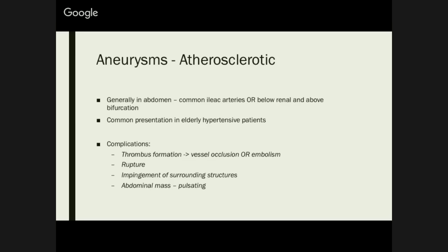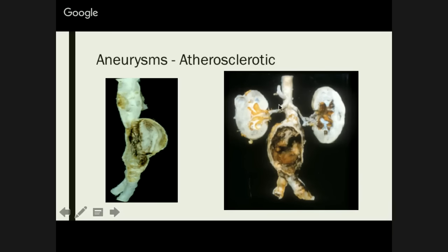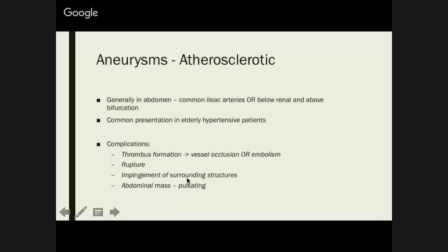If an elderly man with a lot of risk factors for atherosclerosis comes in with abdominal pain or a mass in his abdomen, always think of an atherosclerotic aneurysm. Complications could be from thrombus formation — in areas of the aneurysm where there's essentially no blood flow, blood can pool and form a thrombus, and if bits of it flick off they can cause thrombosis. Ruptures, impingement of surrounding structures, and generally they present as a pulsating abdominal mass — that's your typical question.